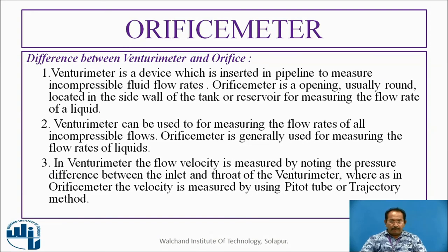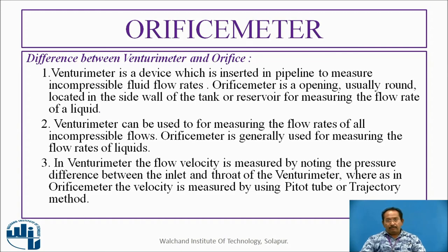What is the difference between Venturimeter and orifice meter? A Venturimeter is a device inserted in the pipeline to measure incompressible fluid flow rates; the flow velocity is measured by noting the pressure difference between the inlet and throat. Whereas in the orifice meter, the velocity is measured using the Pitot tube trajectory method.